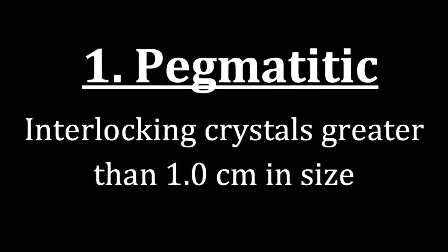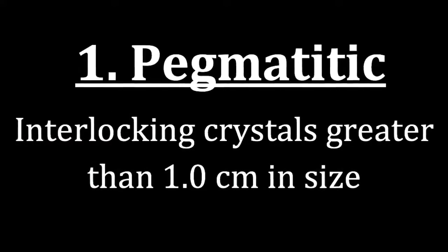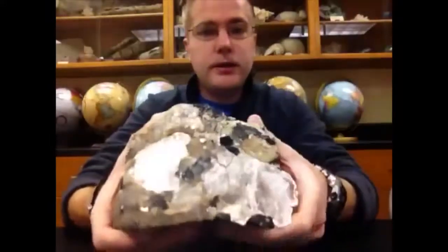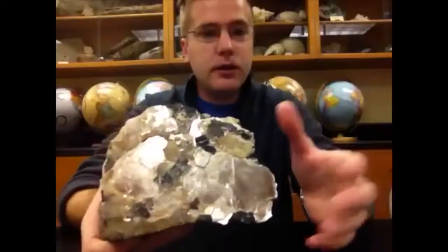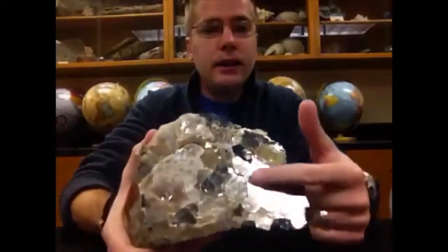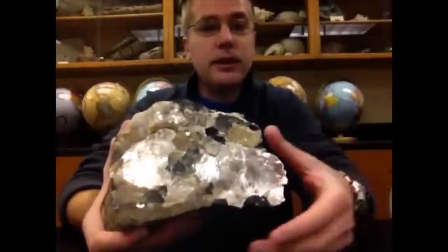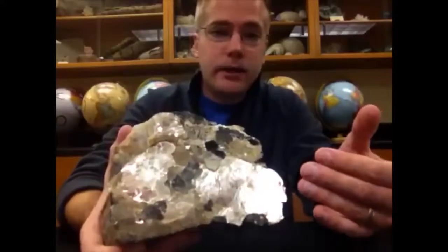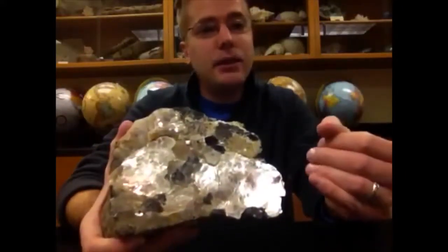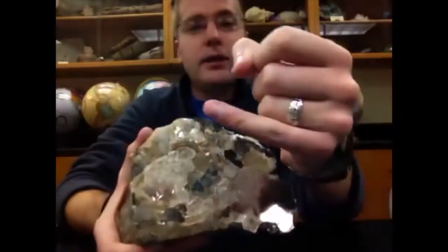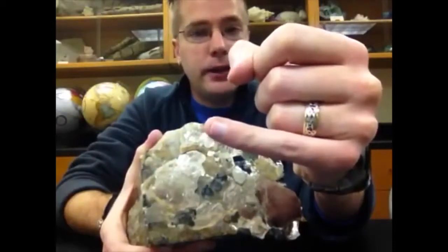In pegmatitic texture, we're looking at interlocking crystals that have a size greater than one centimeter. To help this make sense, we look at a rock and we can see different minerals making it up — light colors, dark colors — and we can see that there are very large crystals. We can see the light shining off of them. To give it perspective, one centimeter is about the size of the average adult's pinky fingernail.